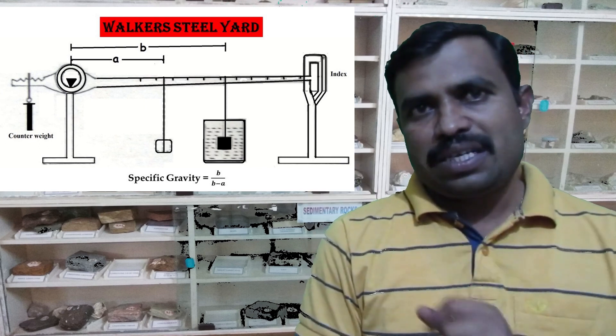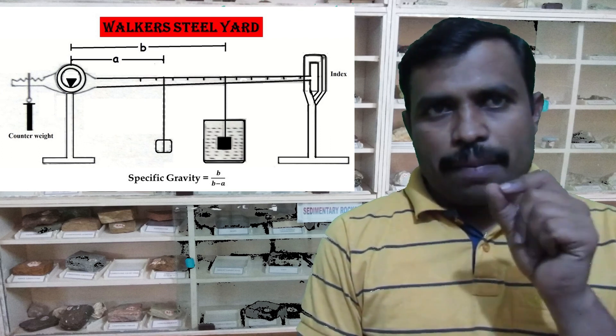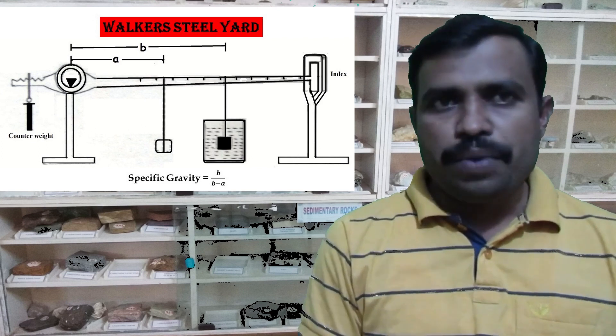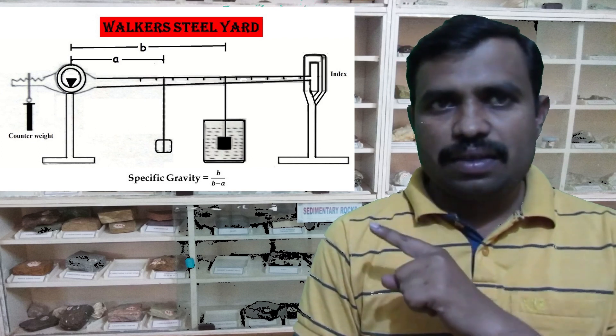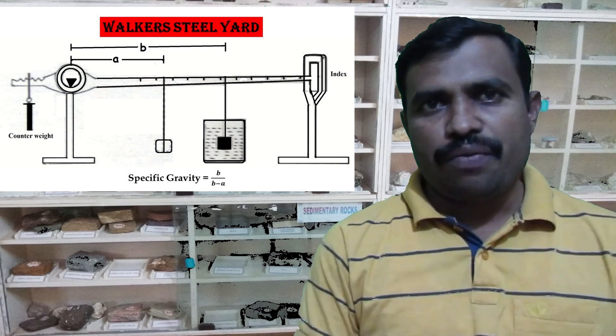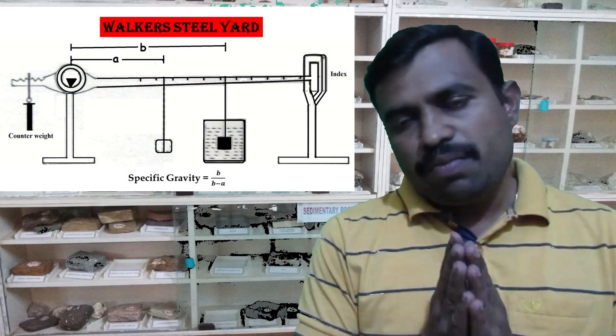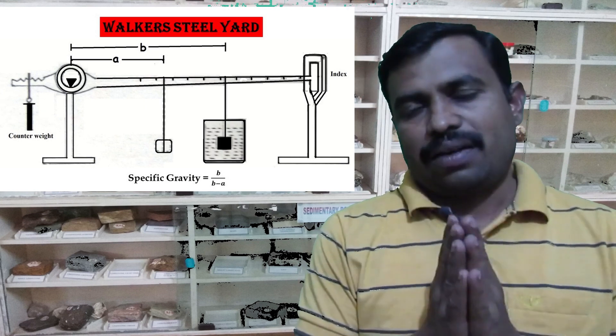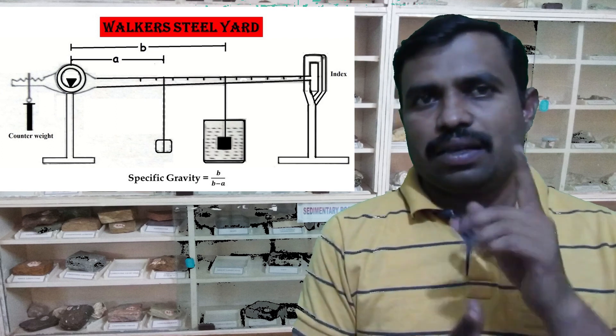Now the specimen is submerged underwater. This is done by placing a beaker filled with water below the specimen. This will disturb the balance. The specimen is then moved away from the fulcrum until the beam again comes opposite the index mark. Let us assume that the new reading is now B.